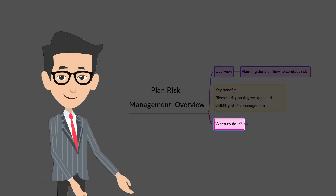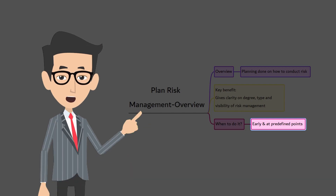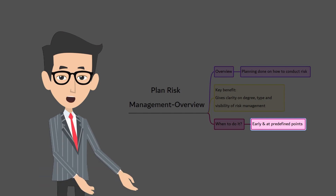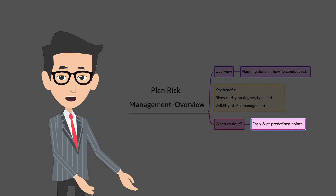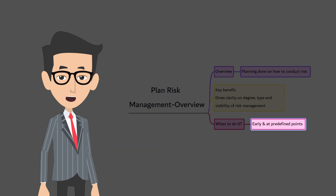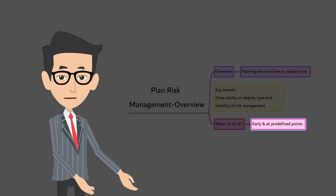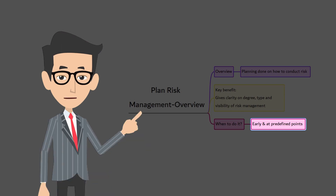The Plan Risk Management process should begin when the project is conceived and should be completed as early as possible in the project. It's an iterative process and should be performed once or at predefined points in the project. It may be necessary to revisit this process later in the project life cycle, for example, at a major phase change, if the project scope changes significantly, or if a subsequent review determines that risk management effectiveness requires modification.